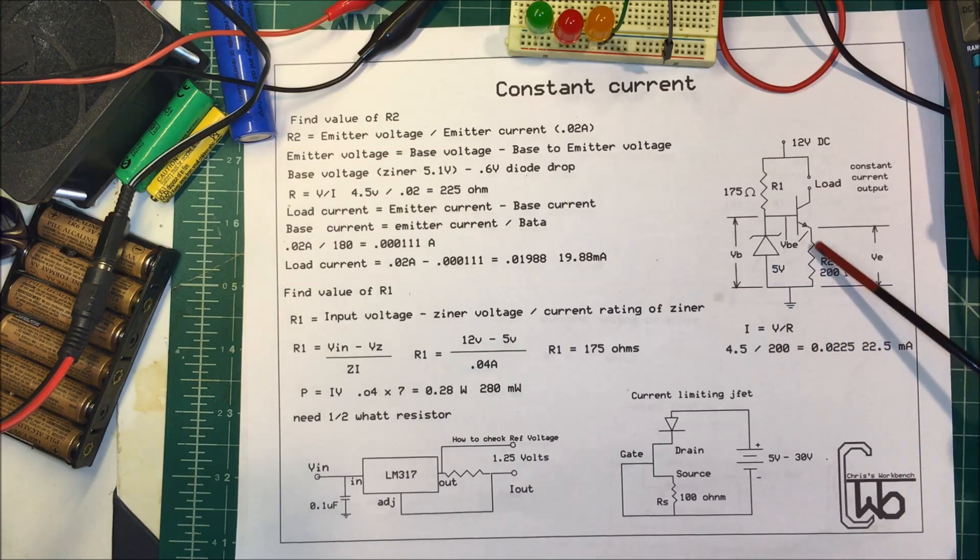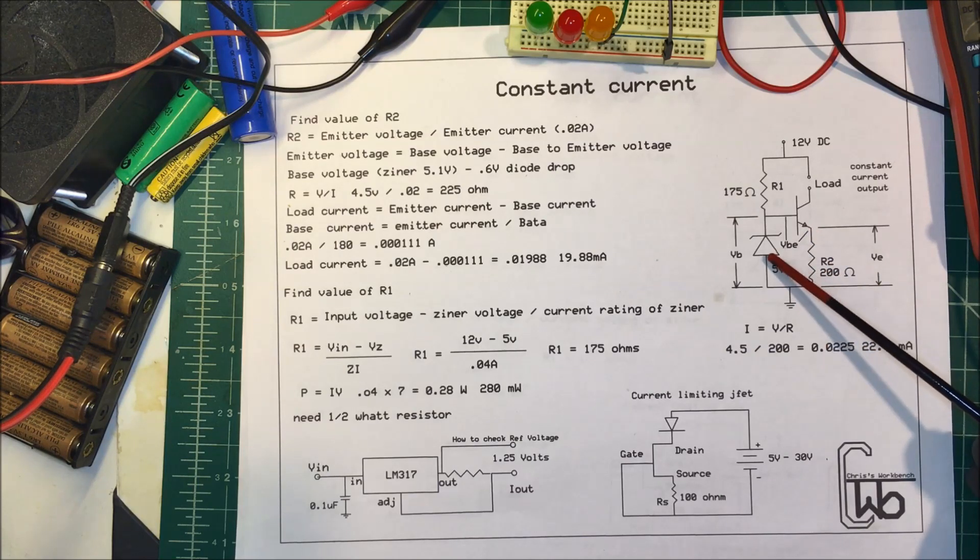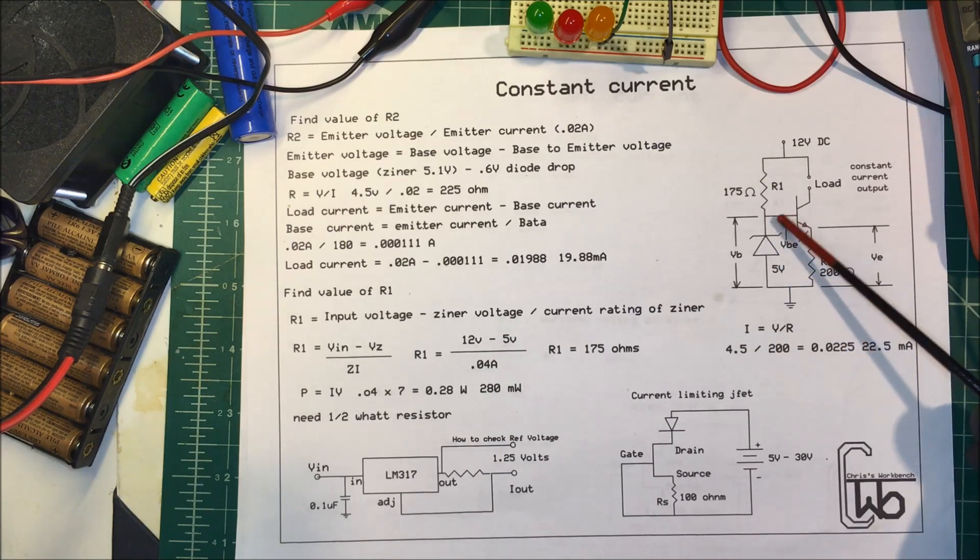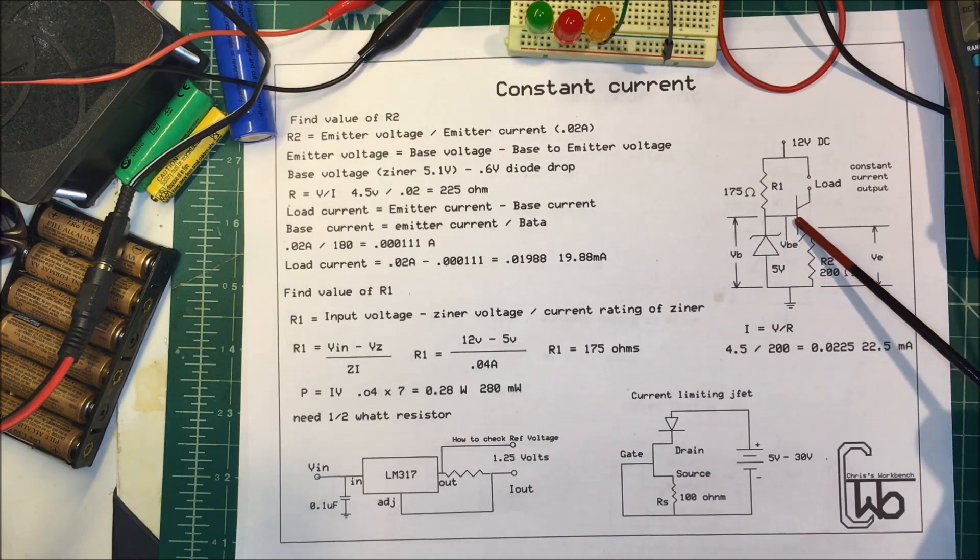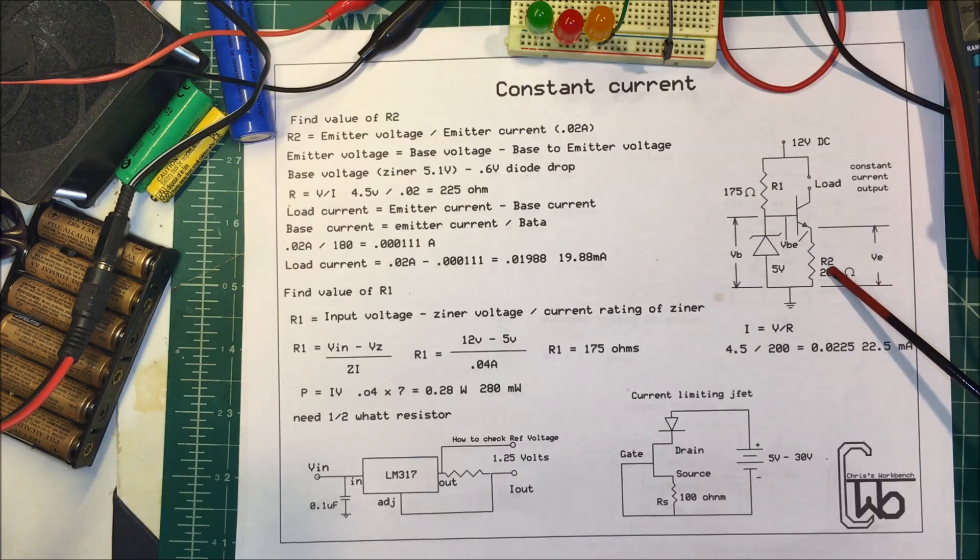We want to maintain this voltage from emitter to ground, so we're going to use a zener diode. It's going to be a 5.1V zener, so we're always going to have our 5.1 volts going into the base. In order to calculate this resistor, this R2 here...